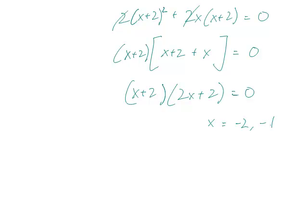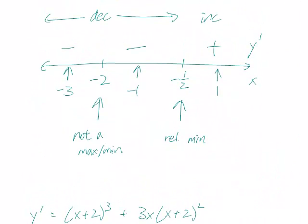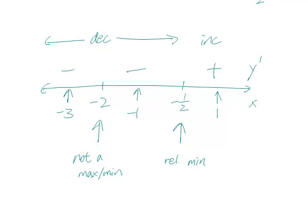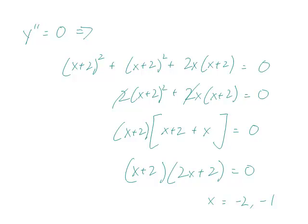And so we have now x plus 2 times 2x plus 2 is equal to 0, and so x is minus 2 and minus 1. And minus 2, remember, was one of our critical points. It didn't give rise to a max or a min, so it makes sense that its second derivative is 0. Because otherwise, if it was a max or a min, then second derivative would have to be negative or positive respectively.